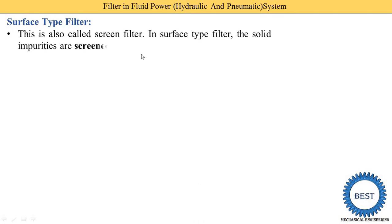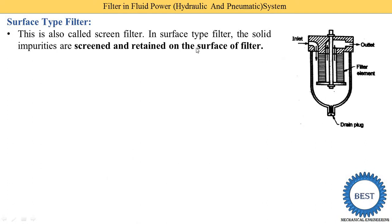The first one is the surface type filter, also called screen filter. In a surface type filter, solid impurities are screened and retained on the surface of the filter. Every filter has some basic components: the inlet, filter element, outlet, and drain plug. The drain plug is generally used to empty the filter. According to where the dust is collected, the filter is classified as surface, depth, or edge type.